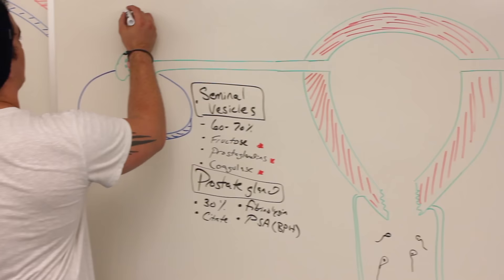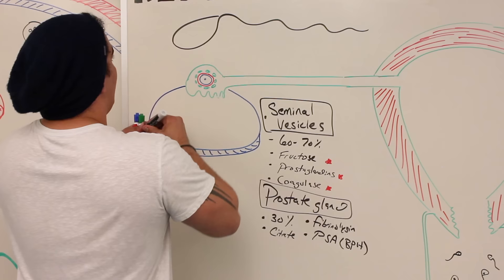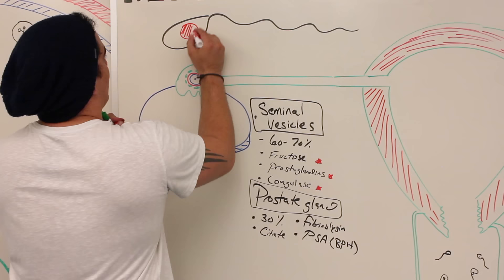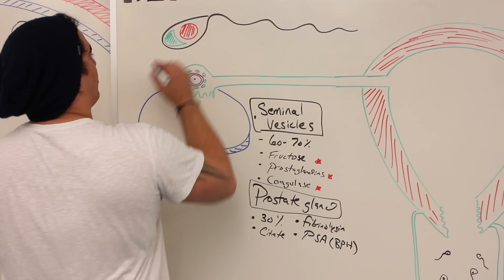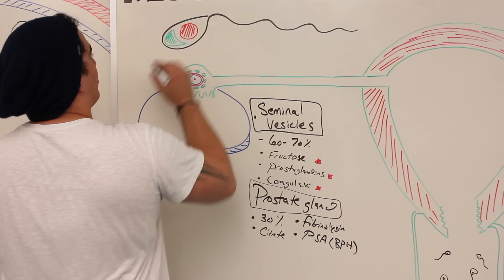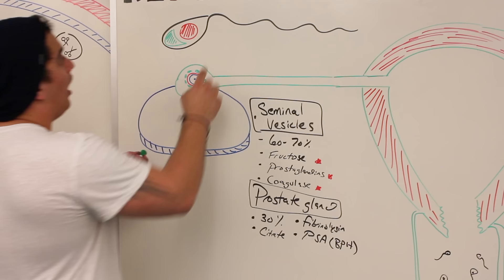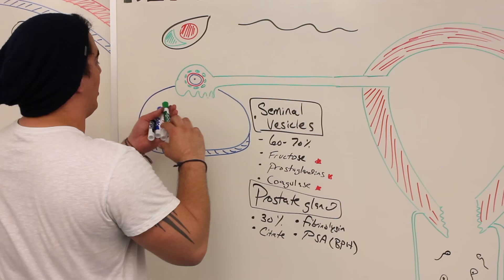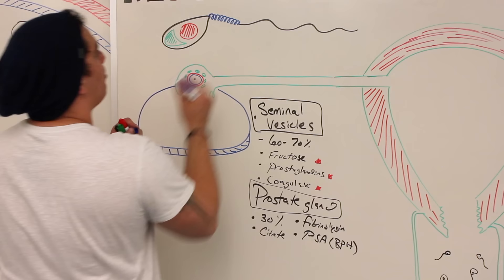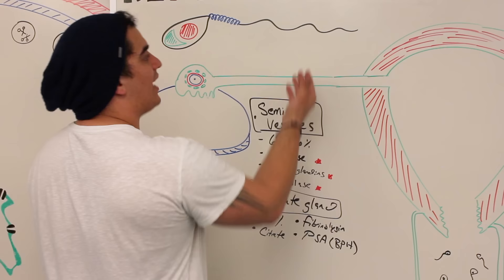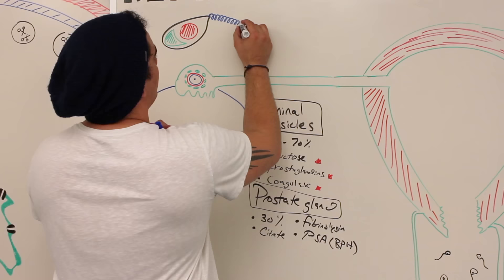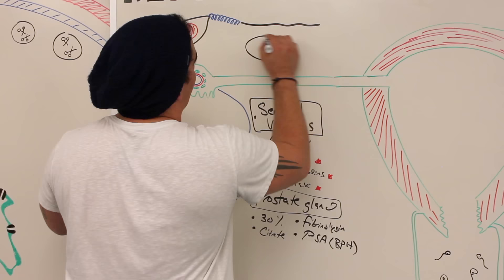Now let's talk about the structure of sperm. If I zoom in on a specific sperm cell: here's the head of the sperm, and in the head you have the nucleus — it's going to have 23 chromosomes. There's also a really important structure called the acrosome, which consists of hydrolytic enzymes like acrosin and proteases. Right here is the mid piece, which is made up of a lot of mitochondria arranged in a coiled manner. The last part is the tail, which has flagella.